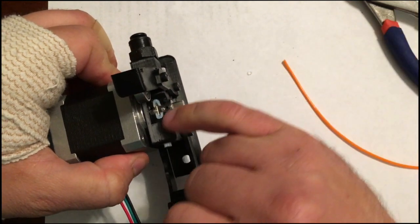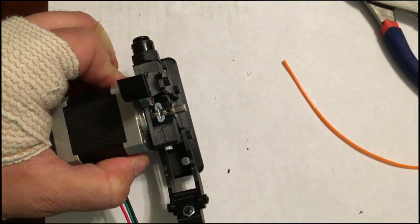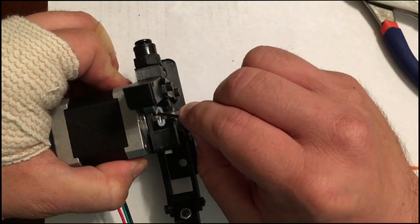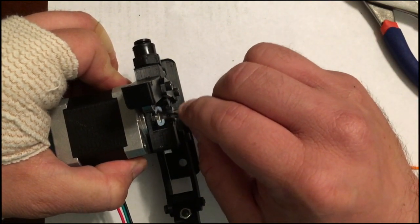Now inside, you can actually see the bowden tubing going all the way down and being cut, so it constrains the filament.